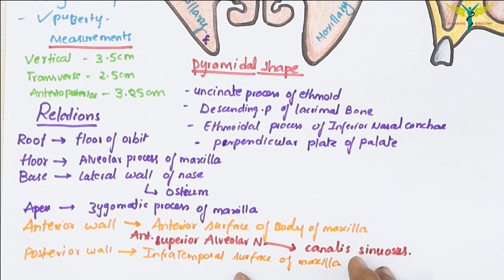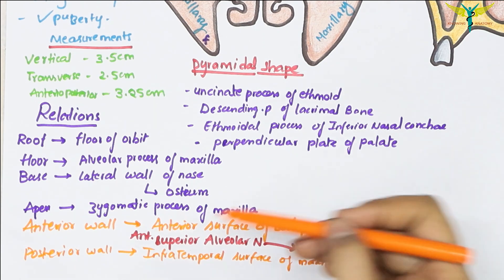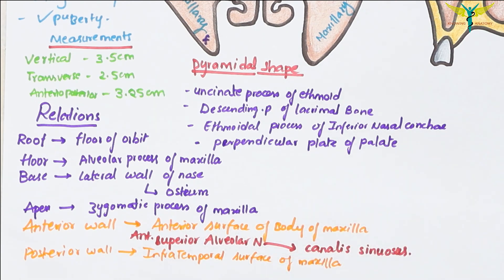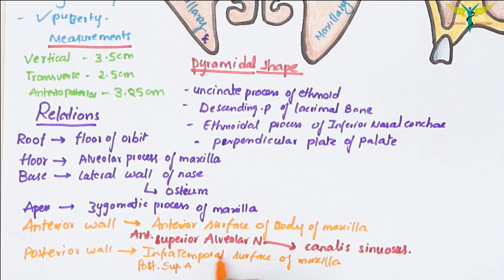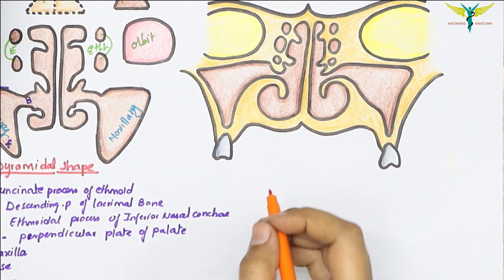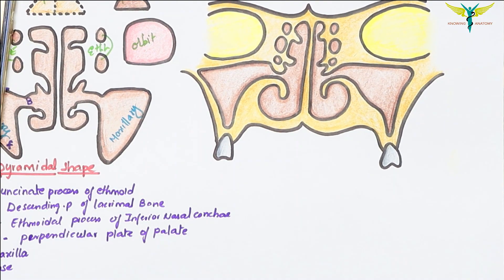Coming to the posterior wall, the posterior wall is formed by the infratemporal surface of the maxilla, which separates the sinus from the infratemporal and the pterygopalatine fossa. It is pierced by the posterior superior alveolar nerve and vessels.